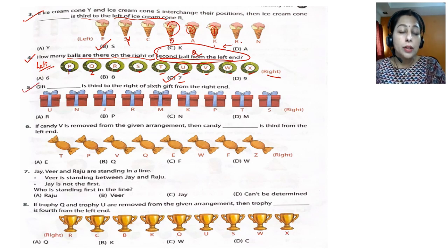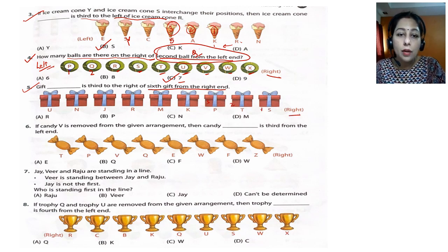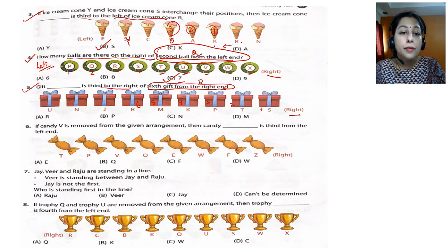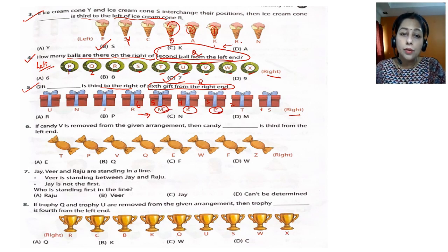Question 5: gift dash is third to the right of the sixth gift from the right end. Read from the back. Sixth gift from the right: one, two, three, four, five, six — that is R. Third to the right of R: one, two, three — so the answer is P, which is option B.